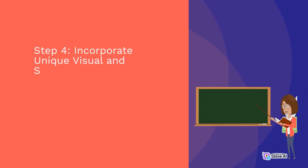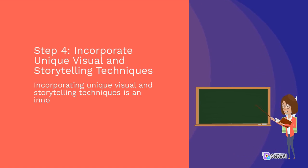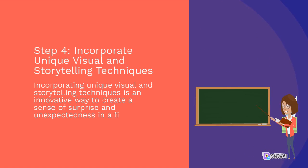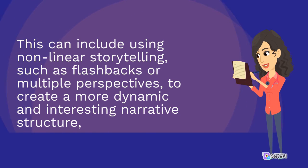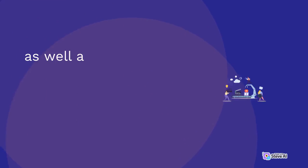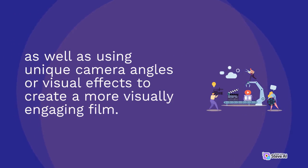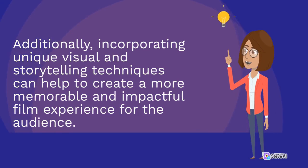Step 4 – Incorporate Unique Visual and Storytelling Techniques. Incorporating unique visual and storytelling techniques is an innovative way to create a sense of surprise and unexpectedness in a film. This can include using non-linear storytelling, such as flashbacks or multiple perspectives, to create a more dynamic and interesting narrative structure, as well as using unique camera angles or visual effects to create a more visually engaging film.